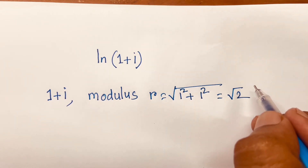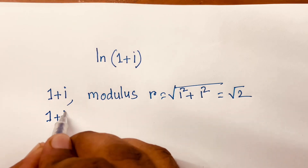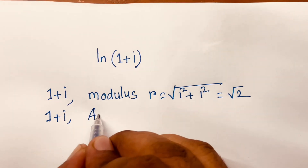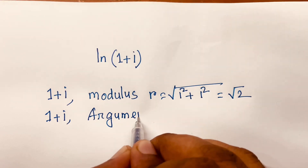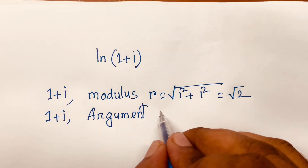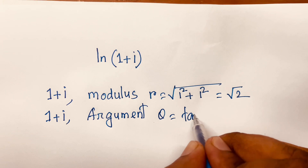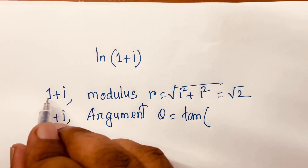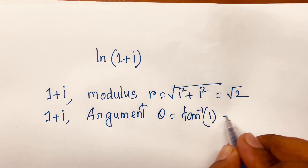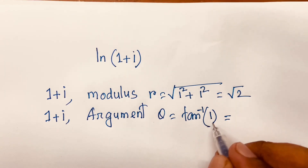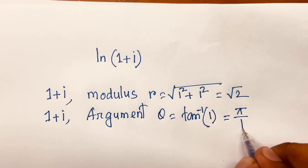Then I find out the argument. So for 1+i, the argument is theta = tan⁻¹(y/x). Here x = 1 and y = 1, so it is tan⁻¹(1/1) = tan⁻¹(1), which gives 45 degrees, that is π/4.